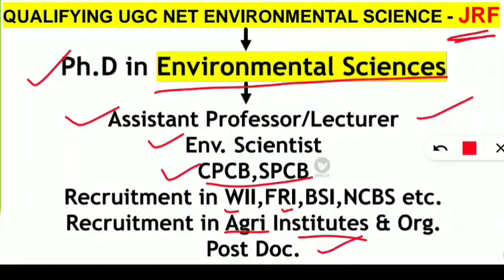If you have a PhD in environmental sciences, you can also go one step further — postdoc. I suggest you go for a foreign postdoc, which will be very helpful financially and career-wise. In a postdoc, the minimum stipend is around 50,000 to 60,000, and if you go abroad it can be around one lakh. These are the important career options after PhD in environmental sciences. Maybe the demand is less right now, but the demand is growing as awareness spreads from one place to another.